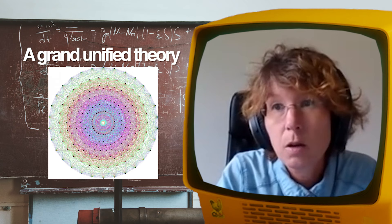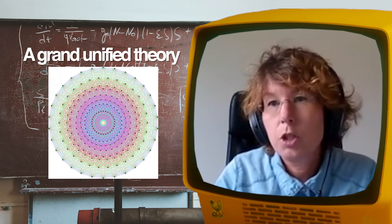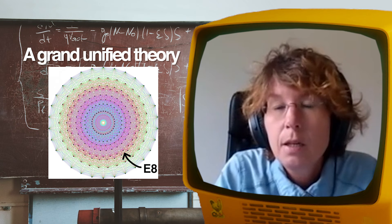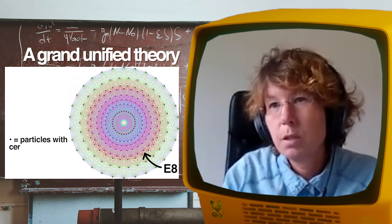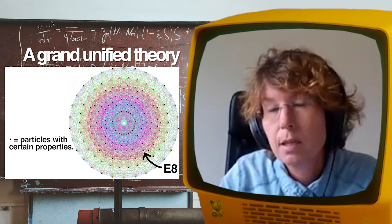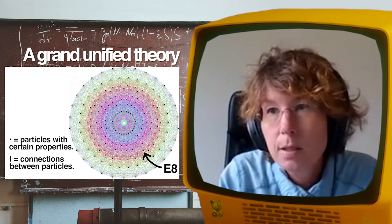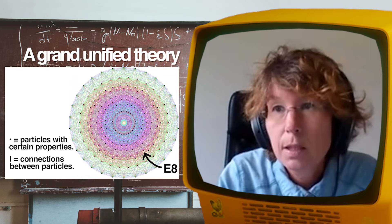So I have this little image here which shows you a certain kind of symmetry group which is called E8. You can think of these little dots basically as being particles with certain properties - charge, color, spin, and so on. And these lines as being the connections between the particles. So this is one of the possible beautiful theories that physicists are considering in the foundations to make the standard model prettier.